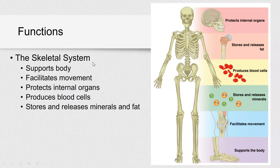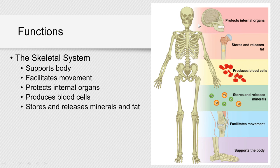Functions of the skeletal system include body support and facilitating movement. You need several systems to work together to allow you to move your external body parts — your muscles, your bones, and your nervous system. It also protects internal organs. For example, the cranial cavity contains the brain, protected by cranial bones. The vertebral column protects your spine, the rib cage protects thoracic organs, and the pelvis protects pelvic organs. Your skeletal system also produces blood cells — not only red blood cells, but also white blood cells and platelets.